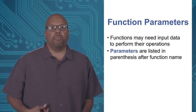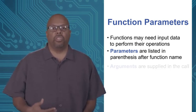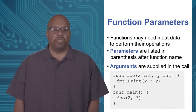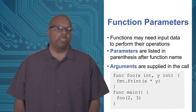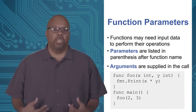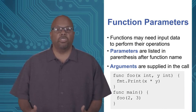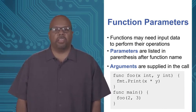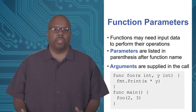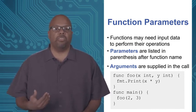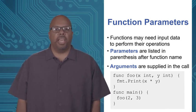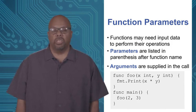An argument is the data that's applied for those parameters during the call. For example, this function foo has x int, y int in parentheses after the name — those are two parameters, x and y, both integers. When the function gets called, the caller is expected to pass two integers. The function just prints the product, x times y. In main, foo is called with two comma three: two is bound to x, three is bound to y, so it prints two times three — it should print out six.